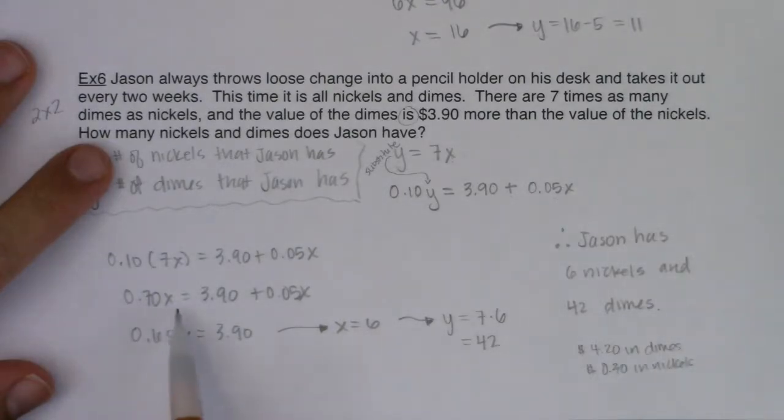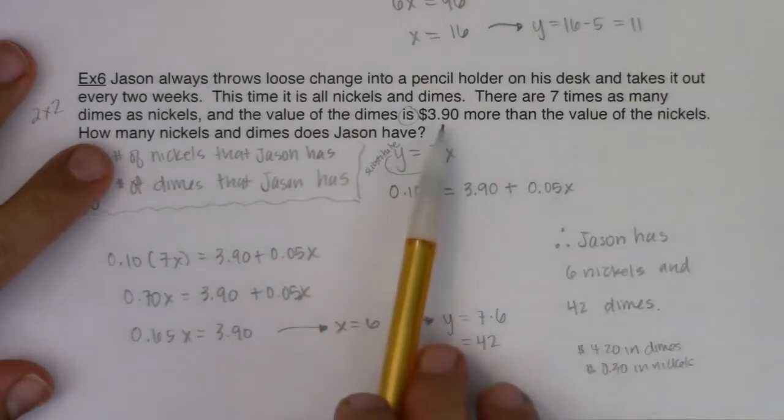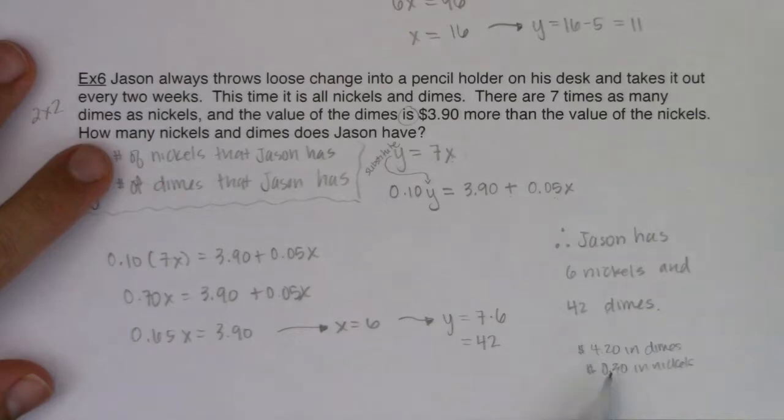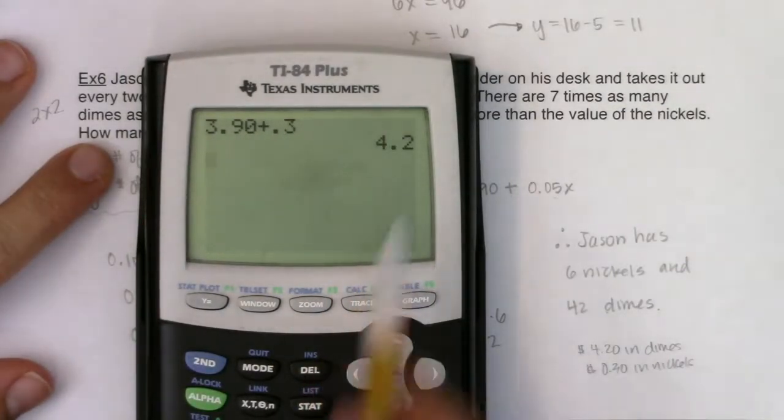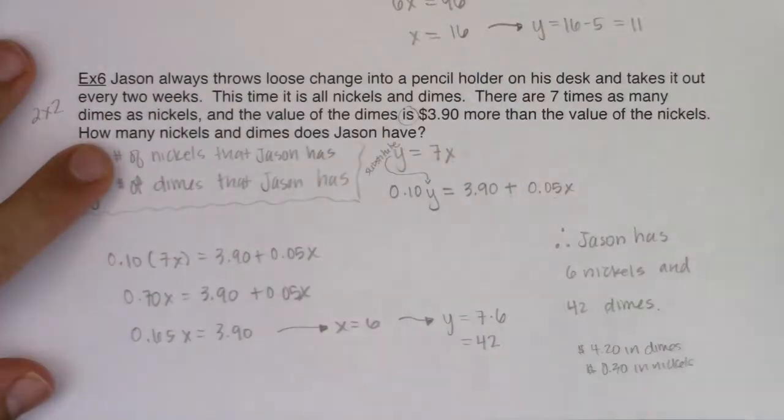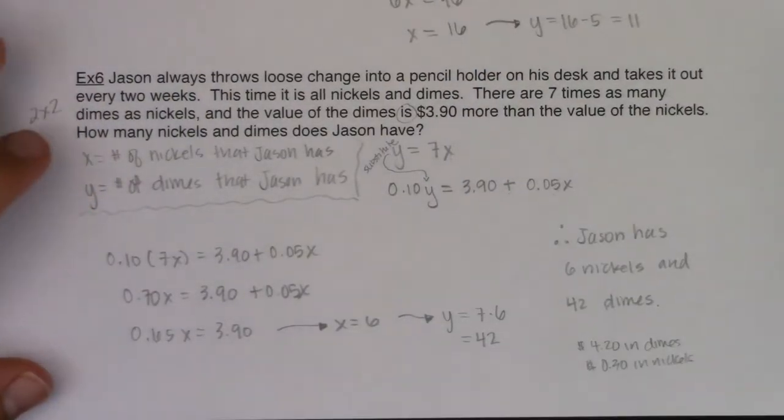Now, is it true that the value of the dimes is $4.20, is that $3.90 more than the value of the nickels? Yes, it is. Because if you took $3.90 and added 30 cents, what are we up to? $4.20. So both of my equations are working.